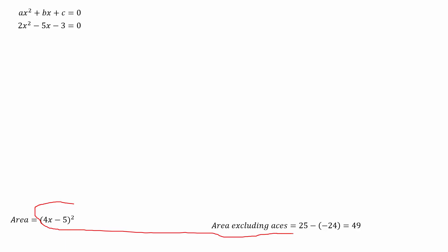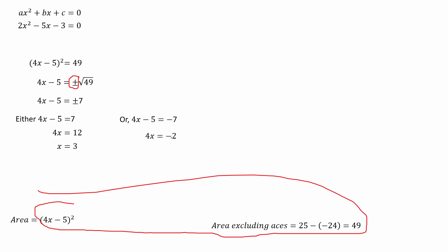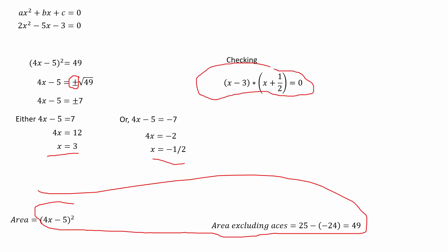To solve the quadratic equation, we equate the two areas, giving (4x − 5)² = 49. Taking the square root of both sides with plus and minus signs: either 4x − 5 = 7, which gives x = 3, or 4x − 5 = −7, which gives x = −½. These are the two roots of the quadratic equation. Let's verify by multiplying — yes, this is the right answer.